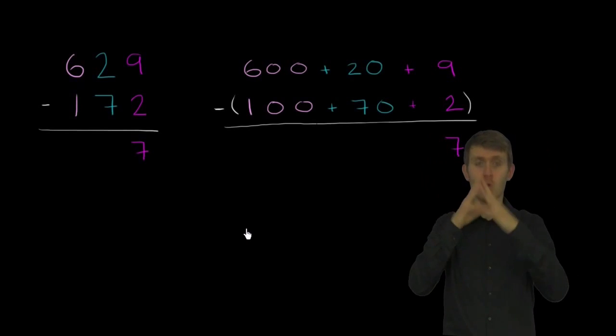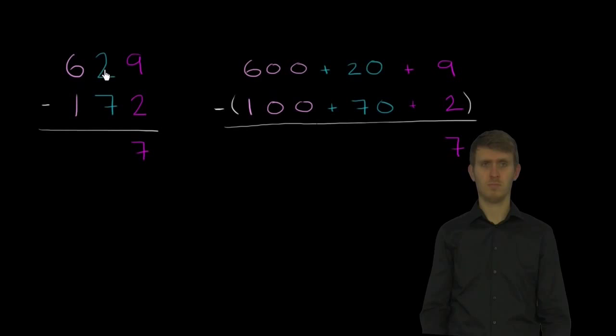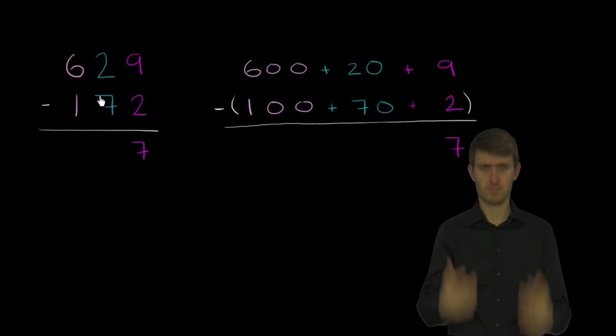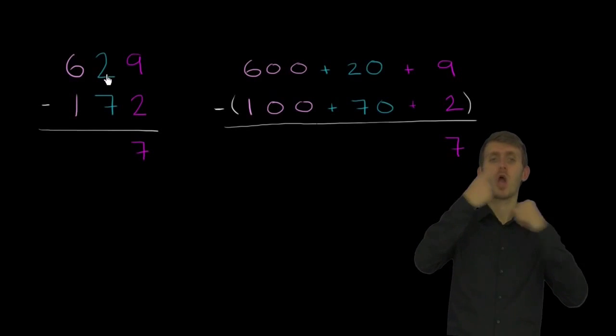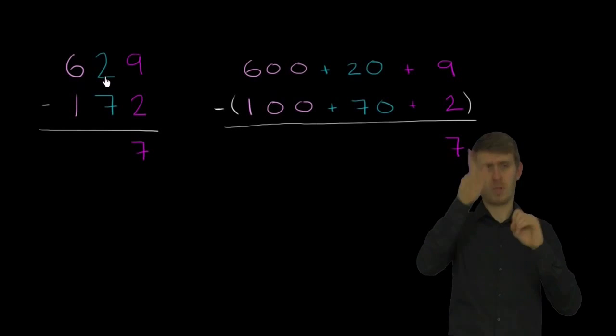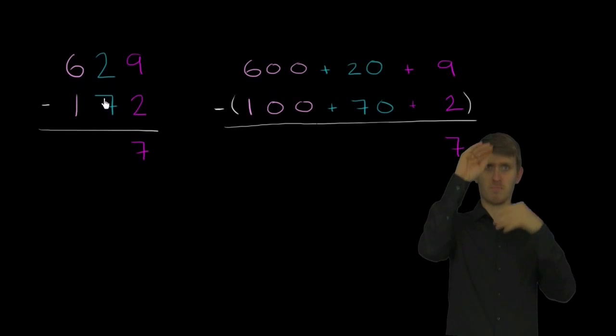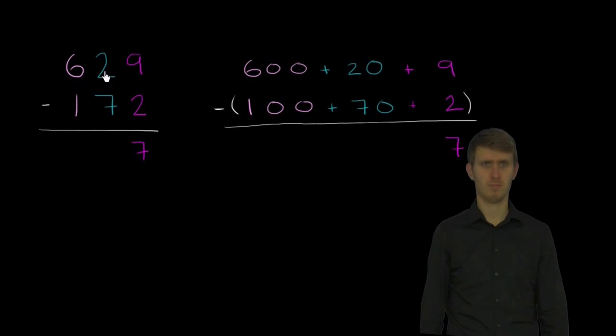But then something interesting happens when we get to the tens place. We're going to try to subtract 2 minus 7, or we're going to try to subtract 7 from 2. And we haven't learned yet how to do things like negative numbers, which we'll learn in the future. So we have a problem. How do you subtract a larger number from a smaller number?